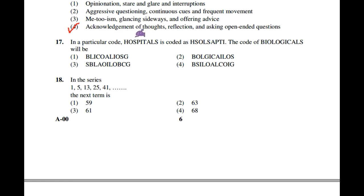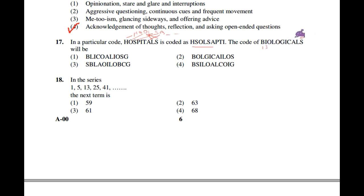Question number 17: In a particular code, HOSPITALS is coded as H-S-O-L-S-A-P-T-I. What will be the code for BIOLOGICALS? By observing the pattern, the letters are rearranged in a specific order. Applying the same pattern to BIOLOGICALS, we get B-S-I-L-O-A-L-C-O-I-G. So the correct option is the fourth one.